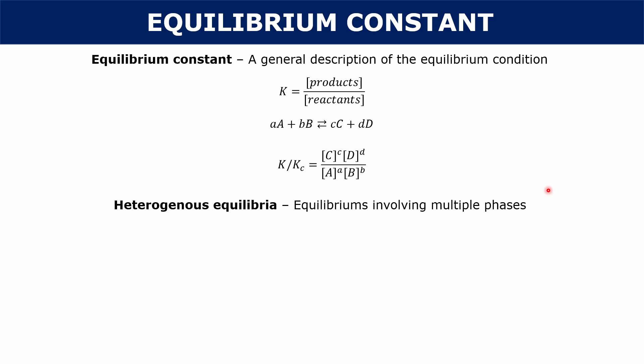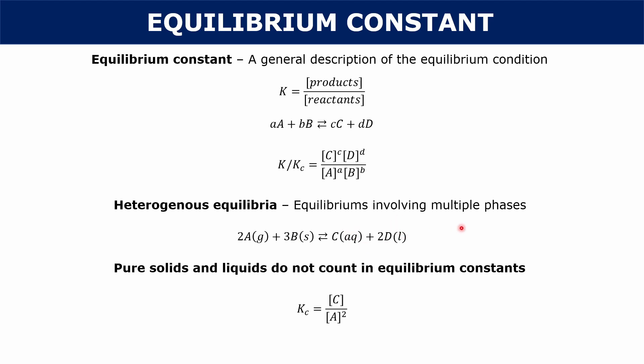It's important to remember that sometimes these equilibria have multiple phases. So if you had an equilibrium like this where a gas and a solid is reacting with an aqueous and liquid, it's important to remember that pure solids and liquids don't count in your equilibrium constants. So the Kc for this reaction would just be the concentration of C over the concentration of A squared.